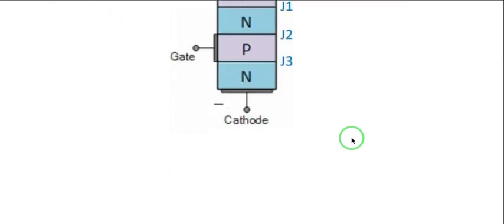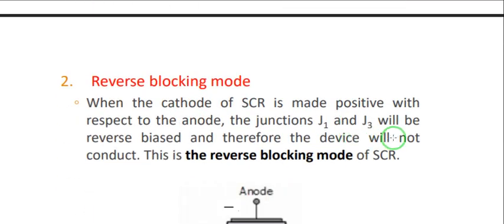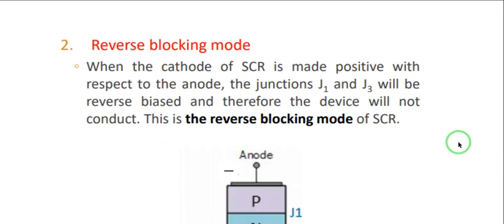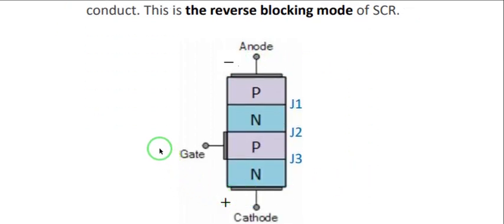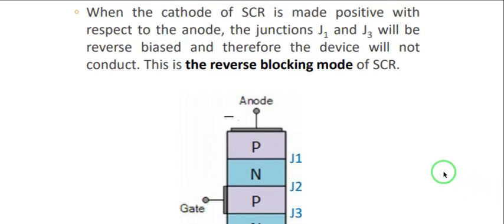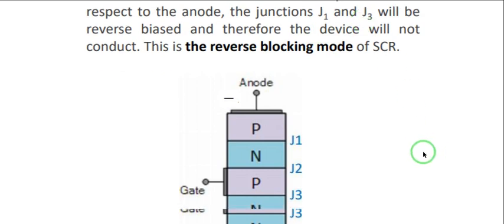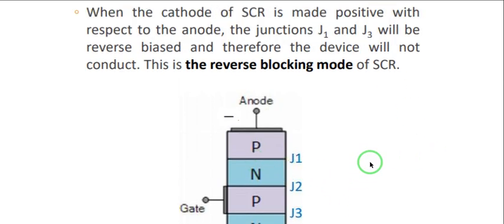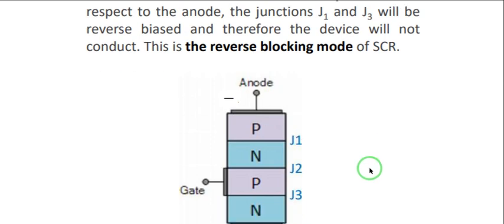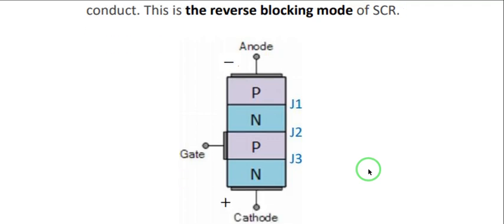The next operating mode is the reverse blocking mode. From the word reverse, the anode is more negative than the cathode. Similarly, the gate terminal is not used. Therefore, junctions J1 and J3 are reverse biased. The SCR is not conducting — it is not allowing current to flow into the circuit or into the terminal itself.